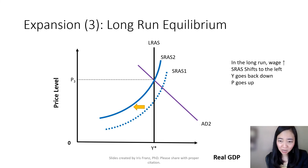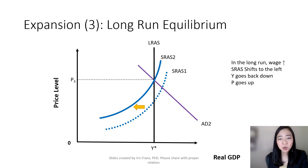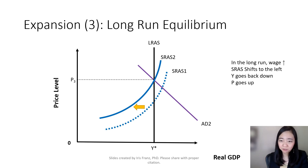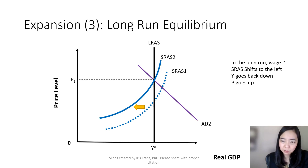Now that the input price goes up, firms will say the input price is so high, so maybe I should produce less. So our short-run aggregate supply curve will shift to the left. And as a result, that will restore our real GDP back to its potential.